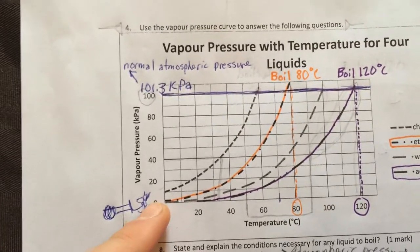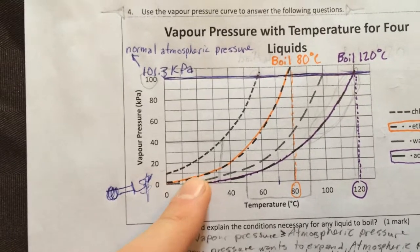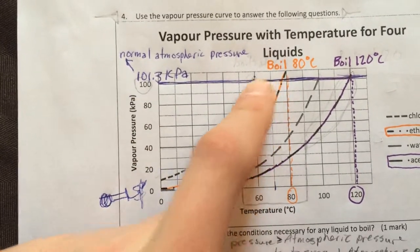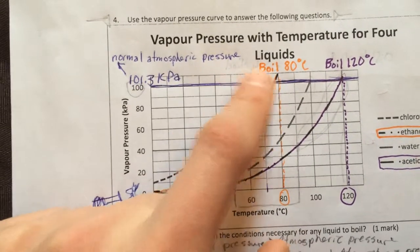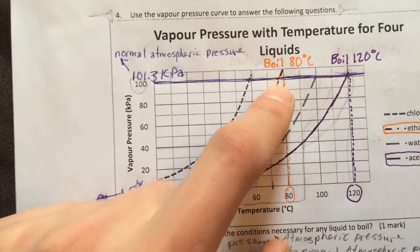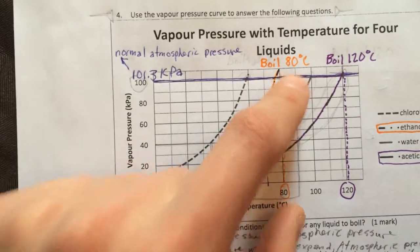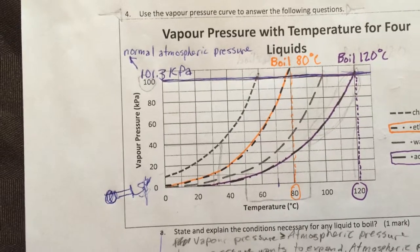So if you look at the answer I put ethanol, if you follow the vapor pressure up to the normal atmospheric pressure, which you would find that's where it boils, the temperature it would boil at is 80 degrees Celsius. So that's for ethanol.